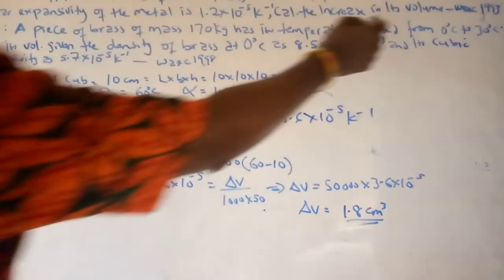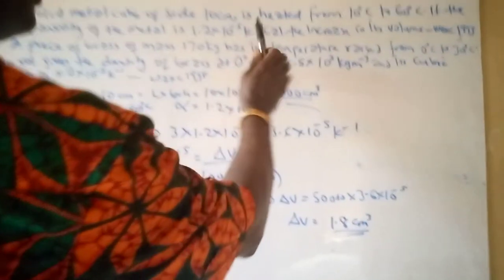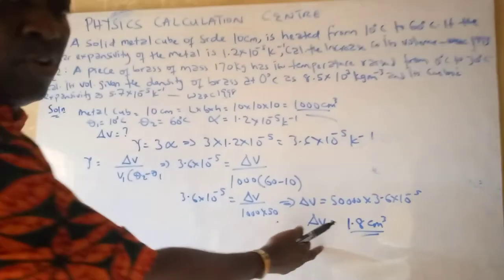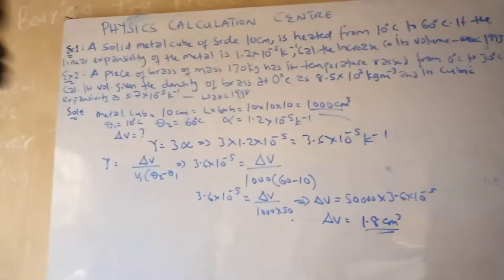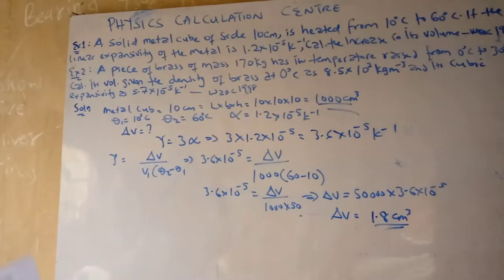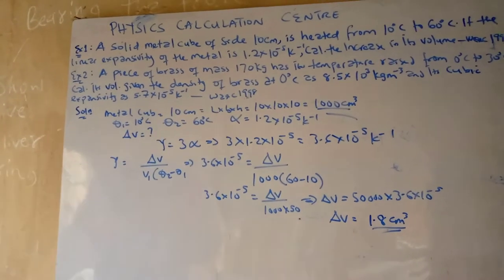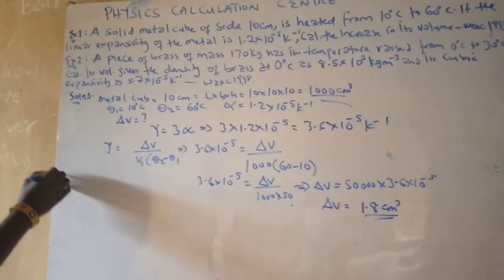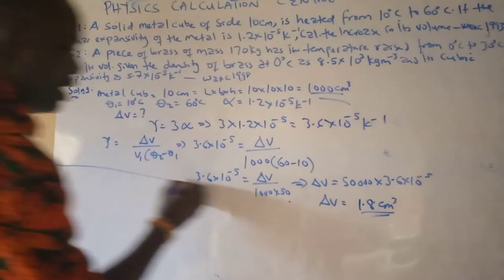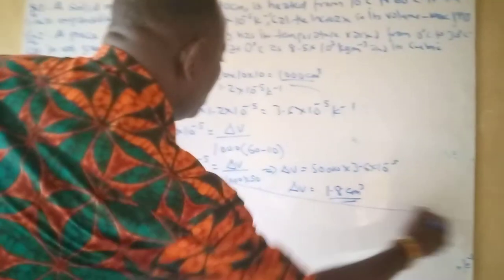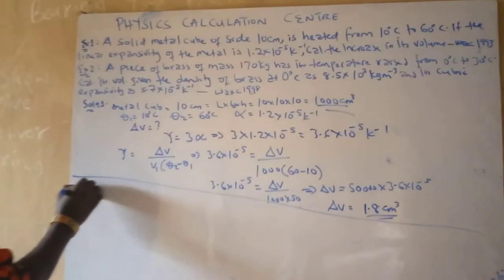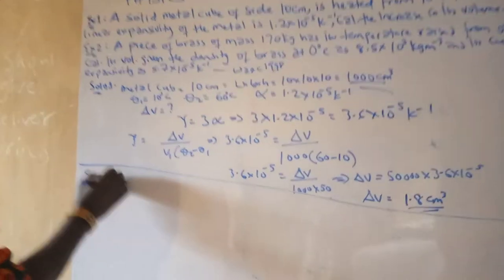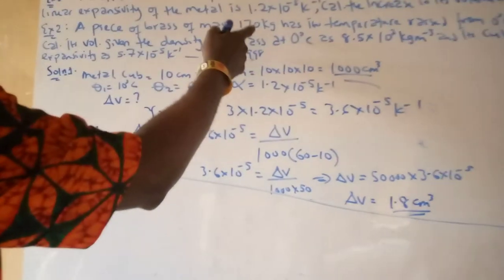So the increase in volume — it says calculate the increase in volume — the increase in volume is 1.8 cm³. That is solution 1. Let's do solution 2 quickly.